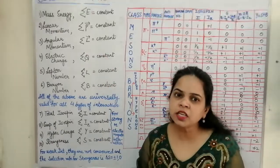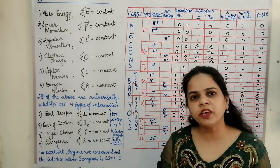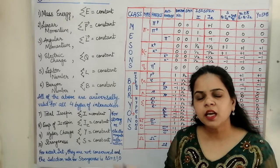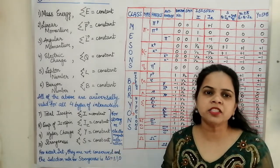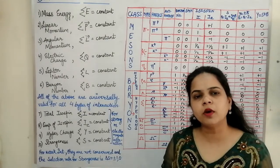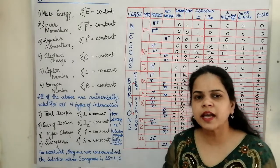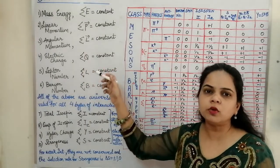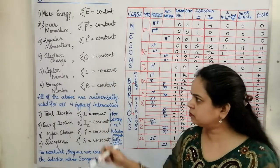Next is electric charge conservation, also referred to as atomic number conservation. The sum of electric charge on the reactant side must equal the sum of electric charge on the product side — that is, the summation of Q must be constant, meaning charge is always conserved.